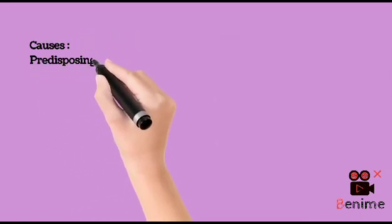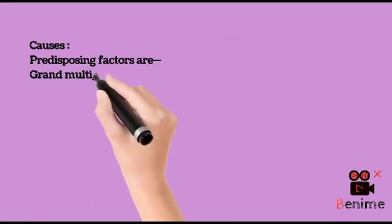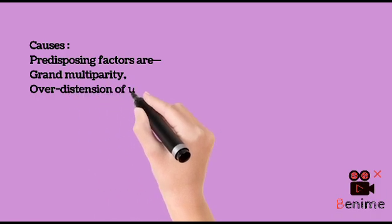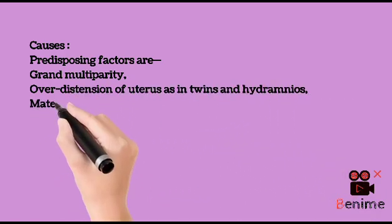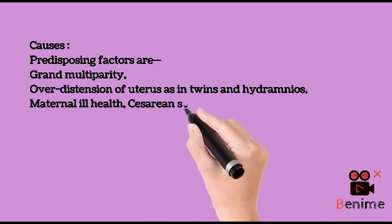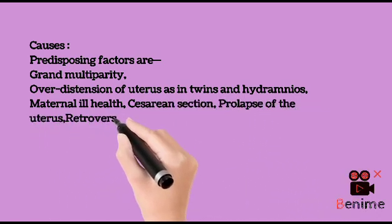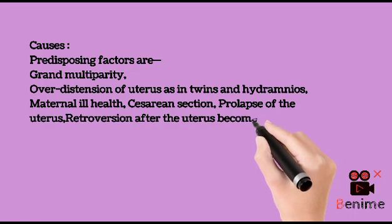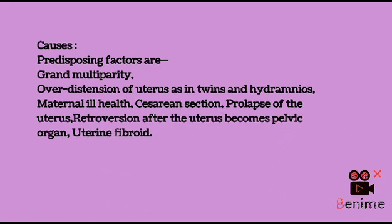Predisposing factors are: 1. Grand multiparity, 2. Over distension of the uterus in twins and hydramnios, 3. Maternal ill health, 4. Caesarean section, 5. Prolapse of the uterus, 6. Retroversion after the uterus becomes a pelvic organ, 7. Uterine fibroid.